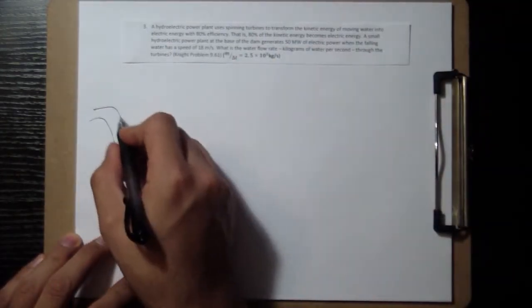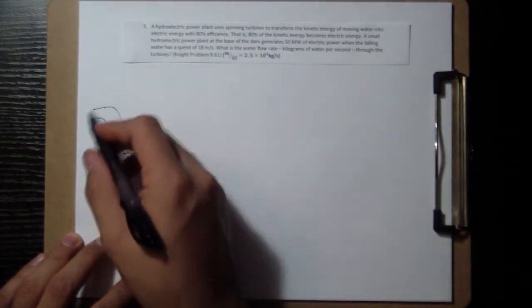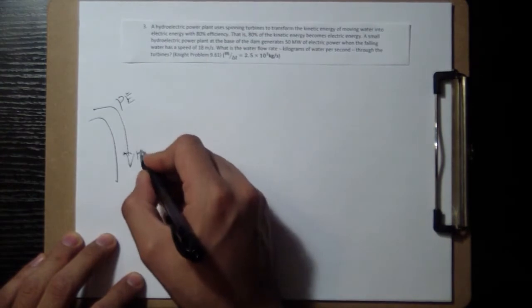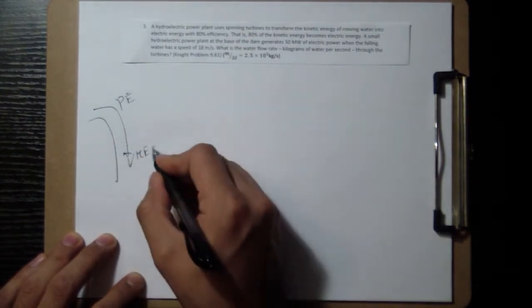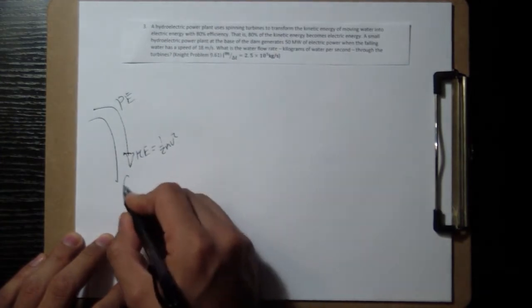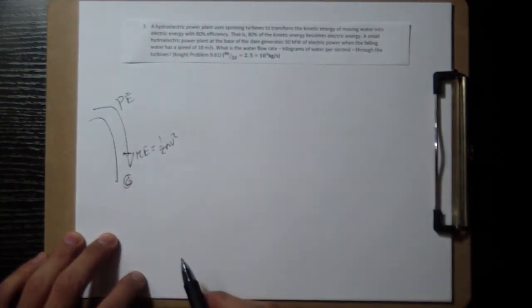So you have water falling from somewhere, which has potential energy, which turns into kinetic energy, and that kinetic energy, which is one half mv squared,